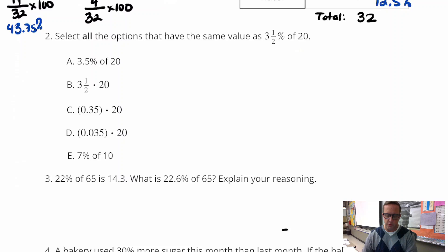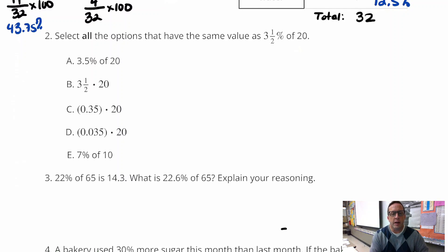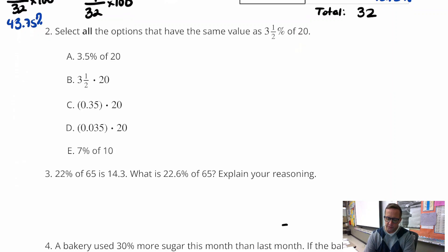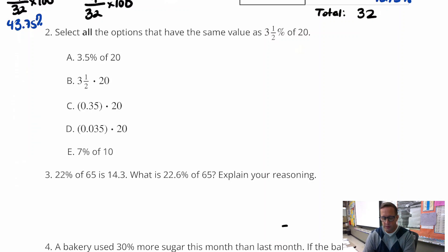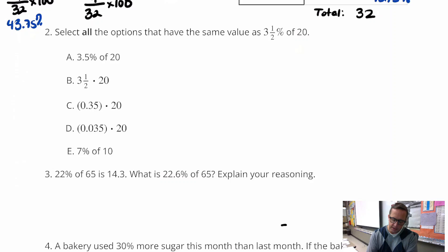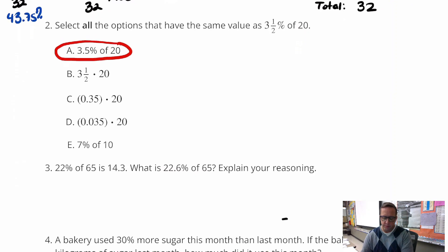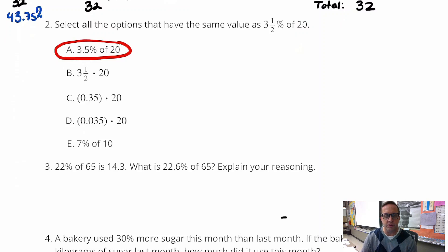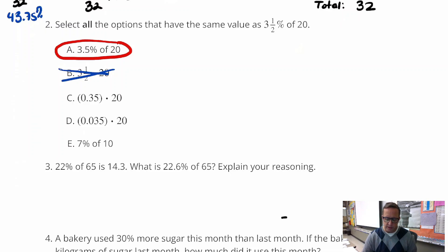For number two, we've got select all the options that will have the same value as 3.5% of 20. So 3.5% of 20. The word of means multiplication a lot of times, especially with percent problems. So it's going to be A. That's 3.5% of 20. The percent has not been changed necessarily to the decimal equivalent, but that's okay. B is just 3.5 times 20, which is not the same thing. It's 3.5% times 20. So that is not going to work.